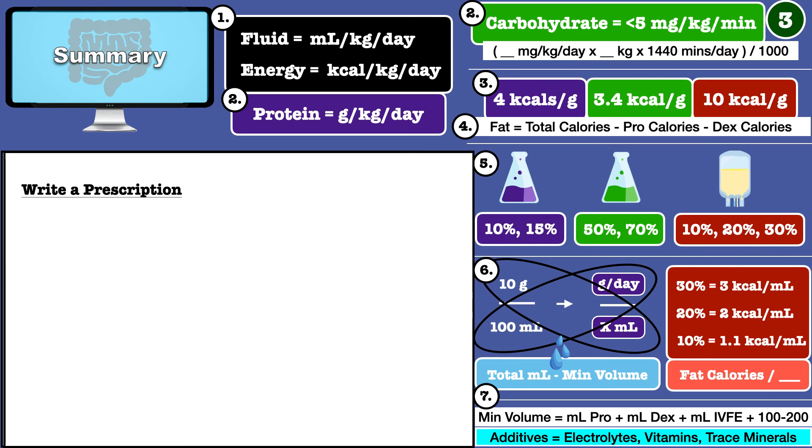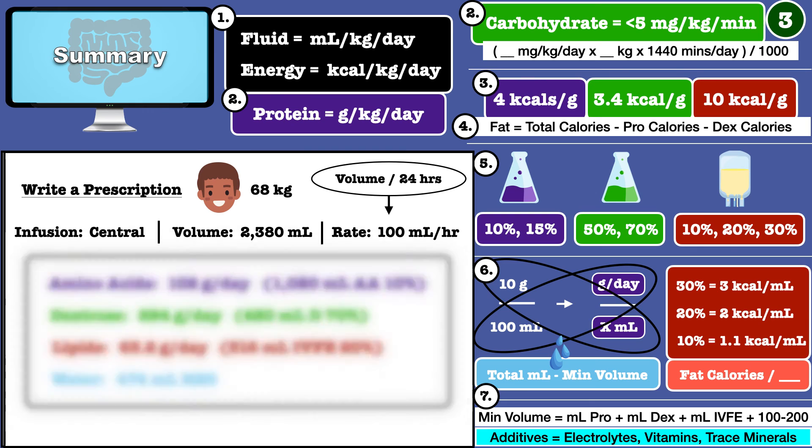The prescription should always identify the patient and the weight used to do the calculations. The infusion site, the total volume, and the rate in milliliters per hour should be documented as well. Last but not least, you list the ingredients.